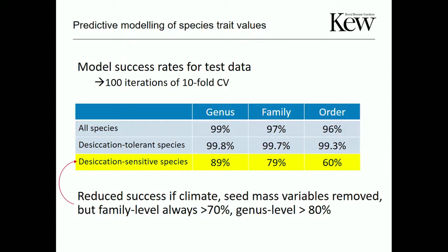Validation: 100 iterations of tenfold cross-validation separating a test set, developing a model on training data, then imputing test species values and checking accuracy. The genus-level model correctly predicts desiccation-sensitive species about 90% of the time. Family level: about 80%. Order level: only about 60%. You really need as much information as possible about related species.